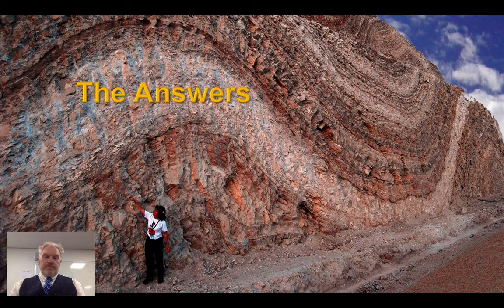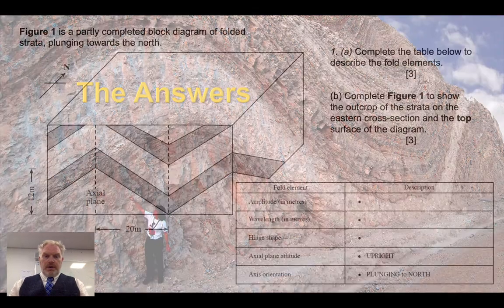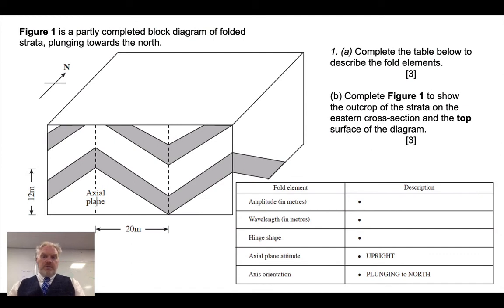Okay then, let's have a look at some answers. The first part of the question was to complete the table to describe the different elements of these folds. The first question is asking you for the amplitude. We can see there that the wave height is shown as 12 metres. Now the amplitude as a result will be half that. Remember amplitude is only half the wave height.